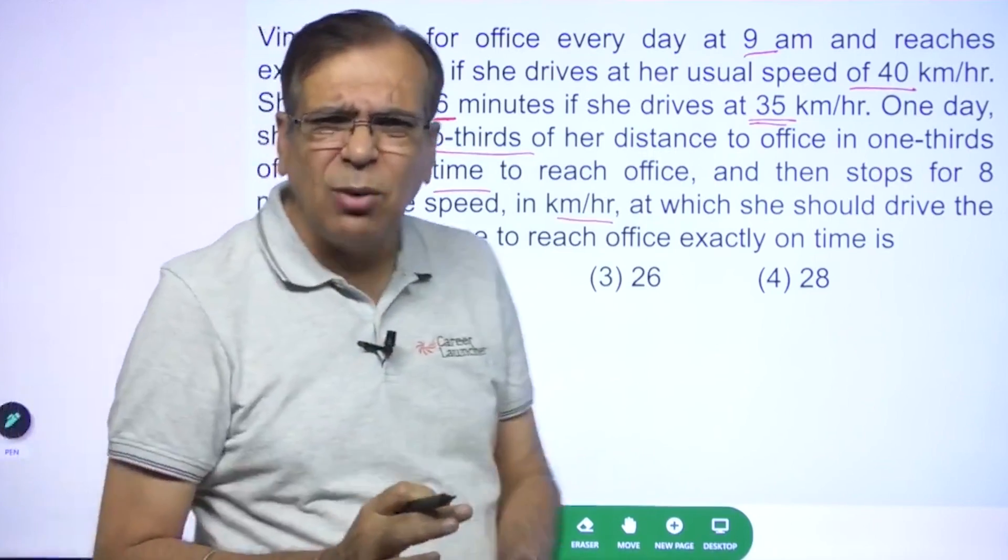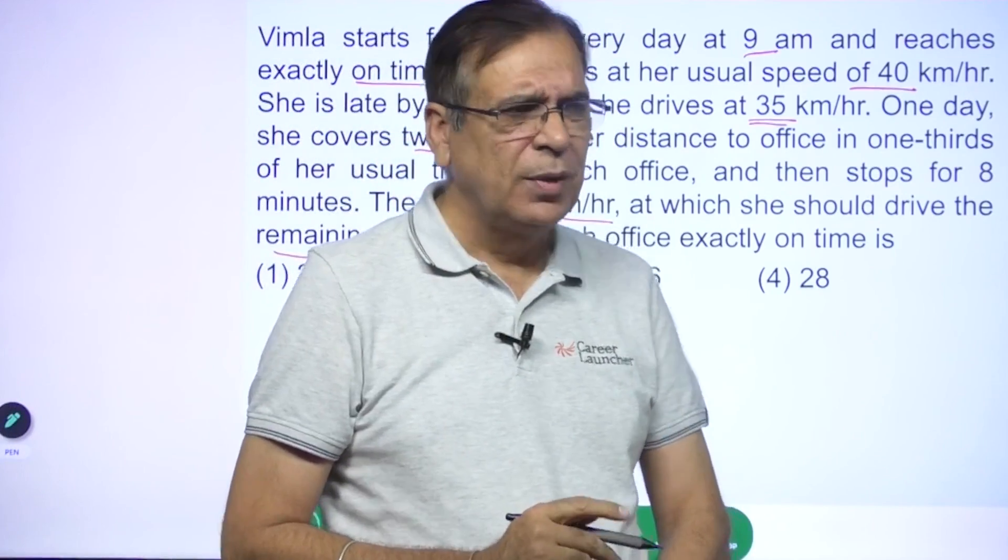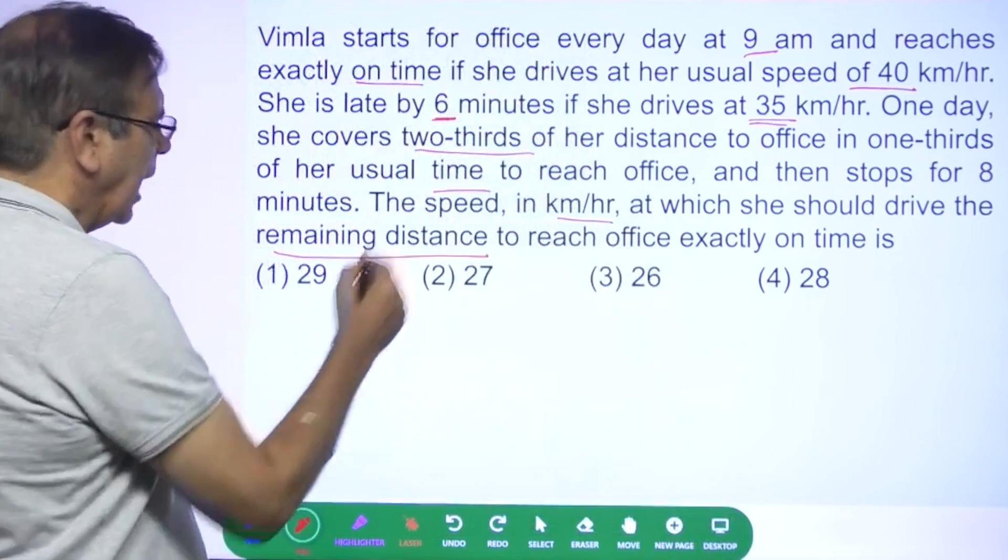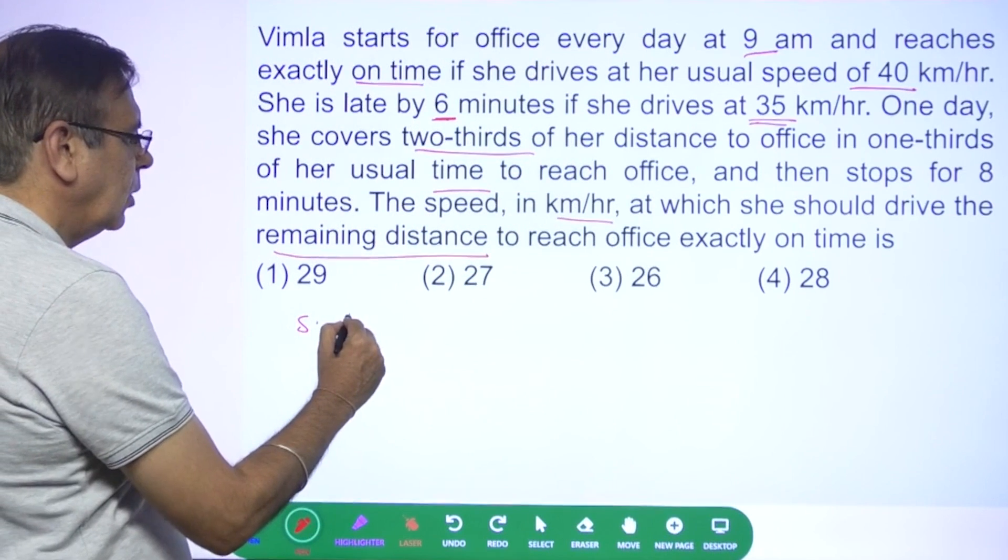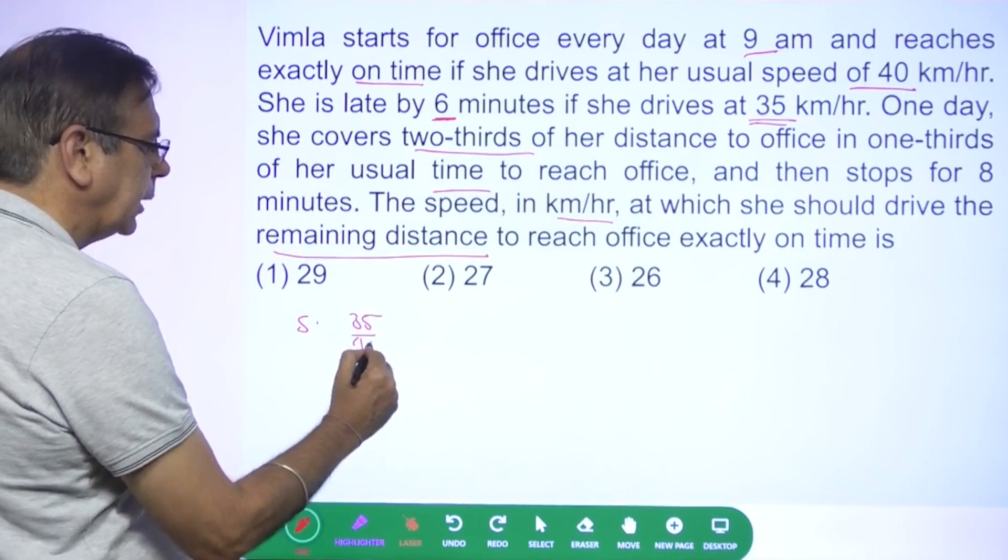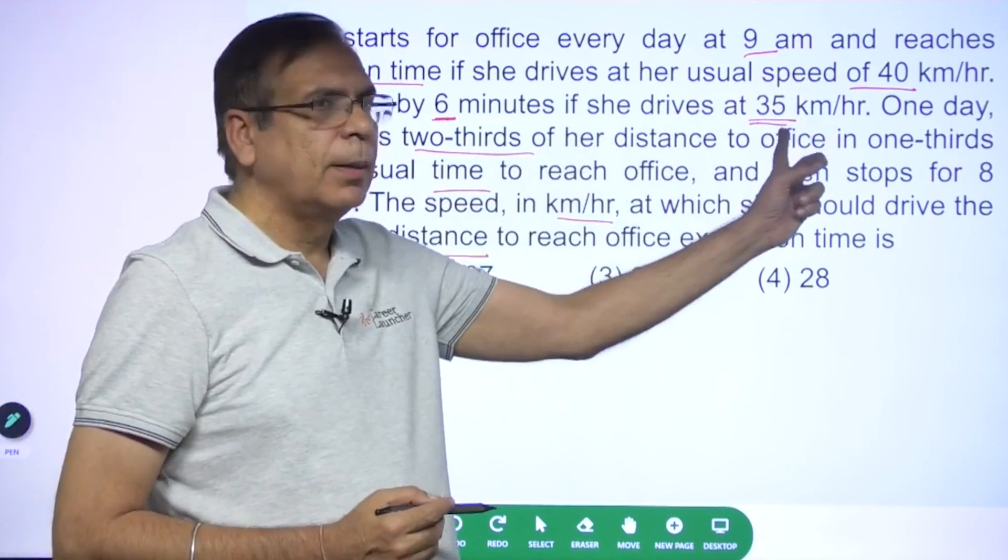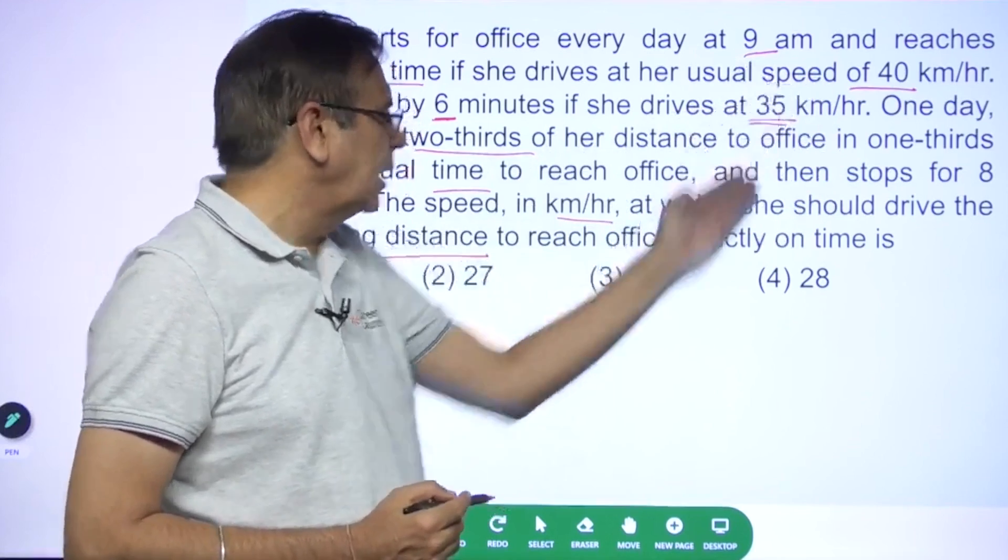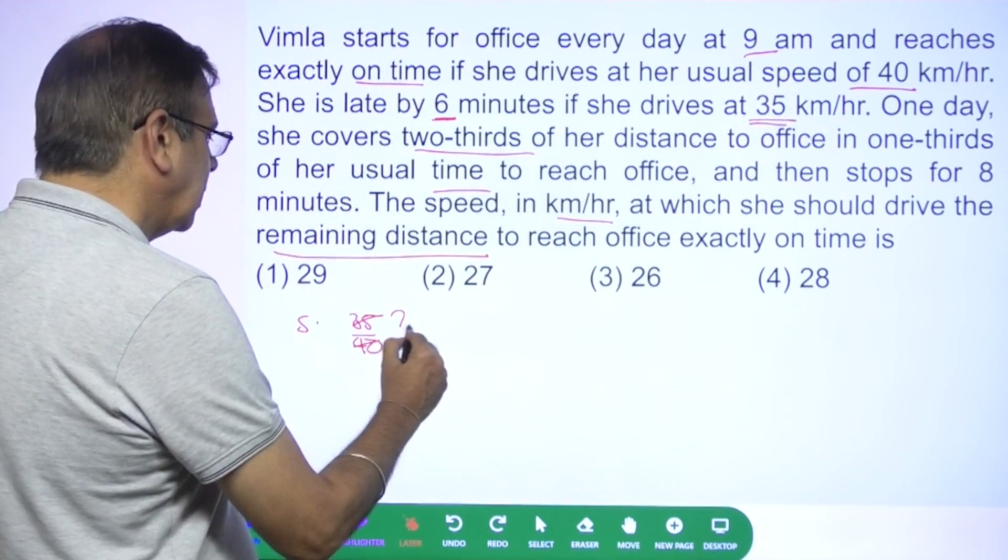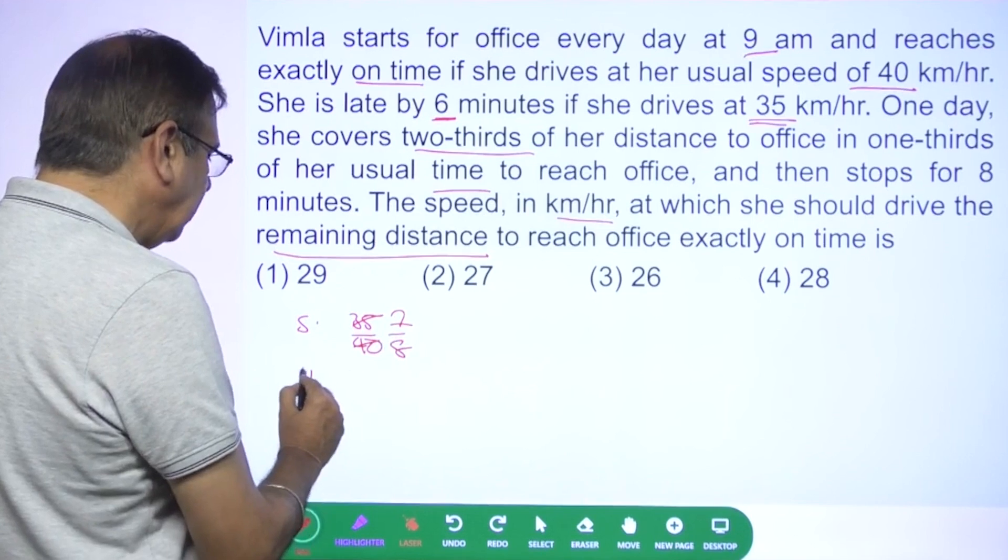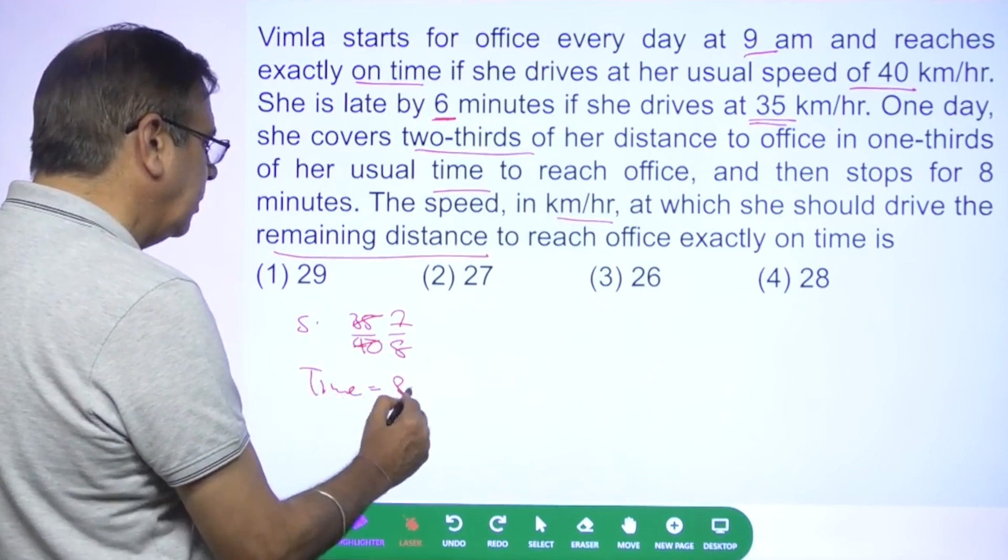Let's first find out how much time she takes. The speed has become 35 by 40 times. The speed was earlier 40 kilometers, now it has become 35, so the ratio of speed is 35 by 40 or 7 by 8. That means time taken should become 8 by 7 times.